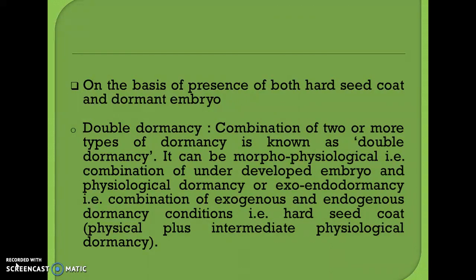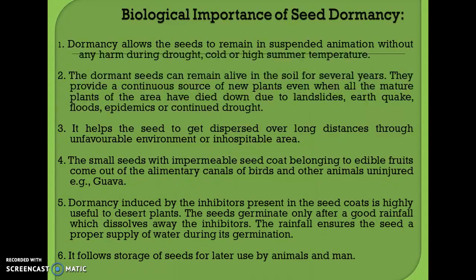The next type is double dormancy — a combination of two or more types of dormancy. It can be morphophysiological, combining underdeveloped embryo (morphological dormancy) and physiological dormancy, or it may be exo-endodormancy, combining exogenous and endogenous dormancy conditions, such as a hard seed coat plus physiological dormancy.